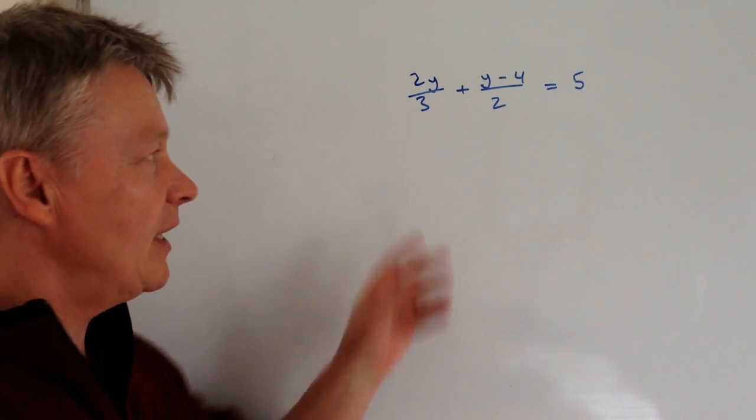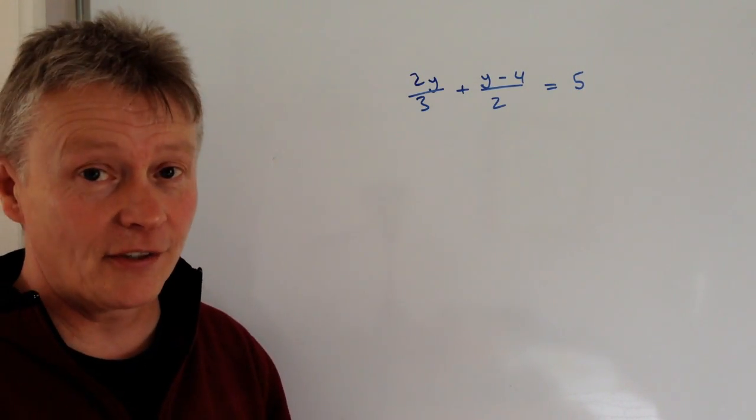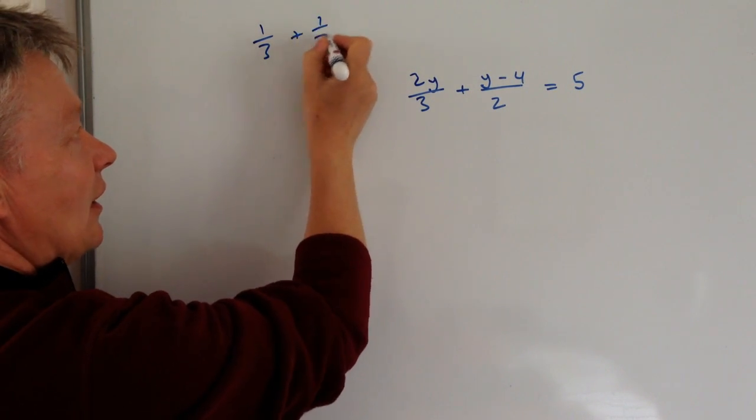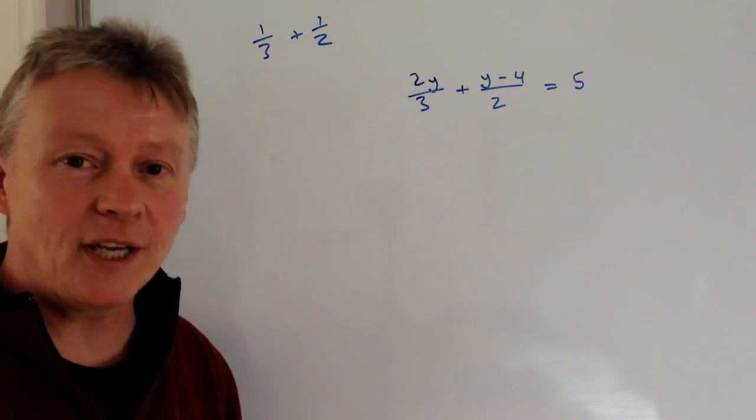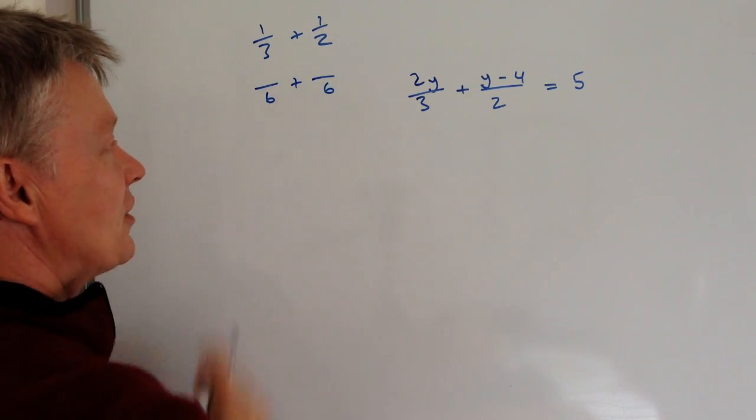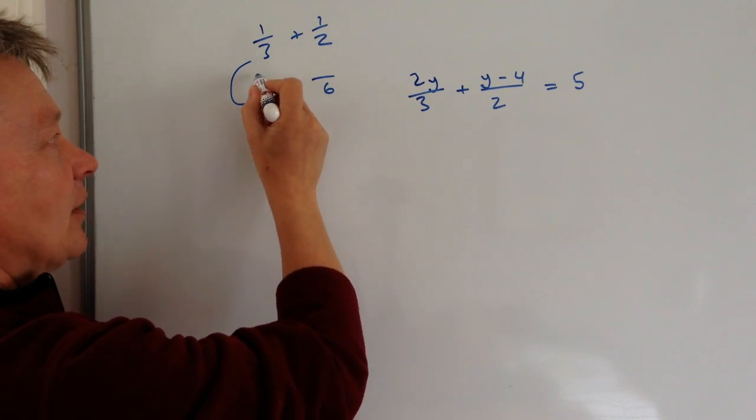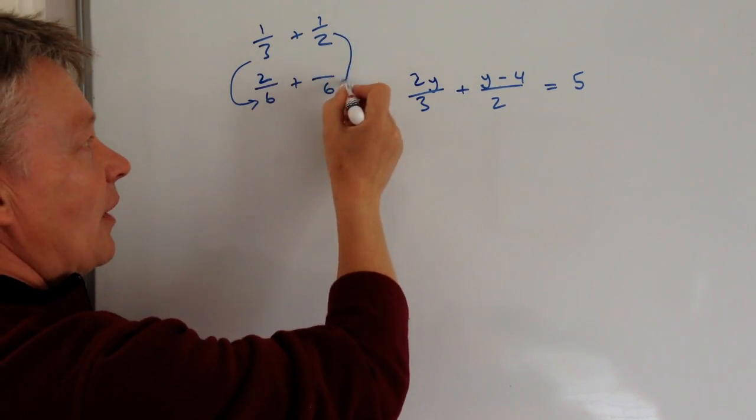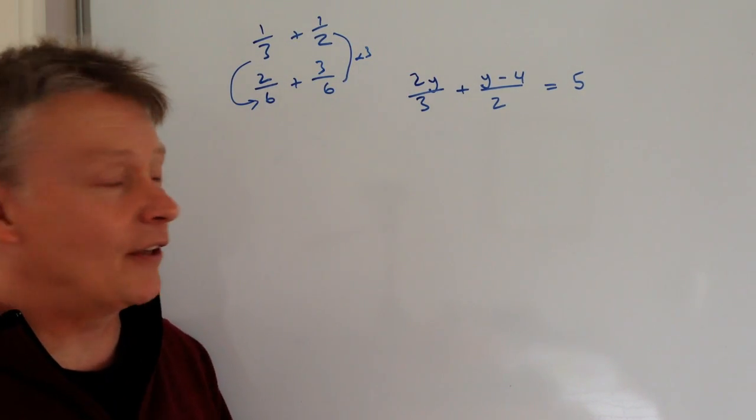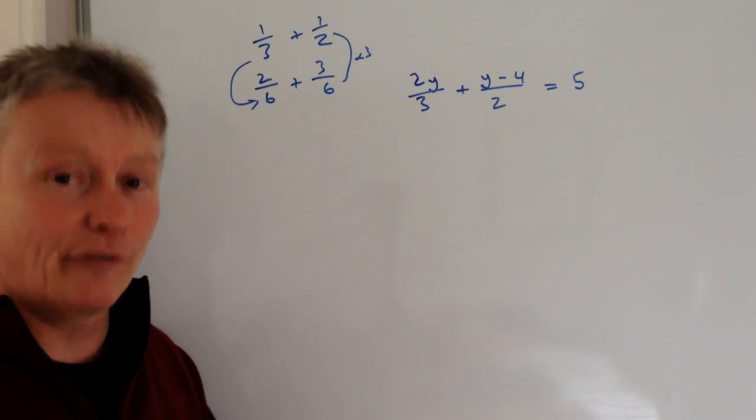The first thing that you need to do is to make sure that the denominators on this side are exactly the same. So it's a bit like saying, what is a third plus a half? If you do that, you make both denominators six. So we multiply that by two and that becomes two and multiply that by three and that becomes three. And then you add those two together. So that's how you would normally deal with a straightforward addition of fractions.